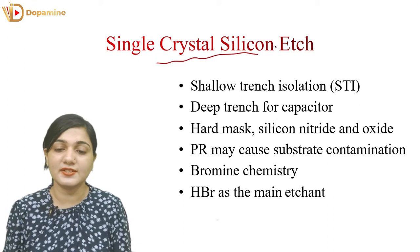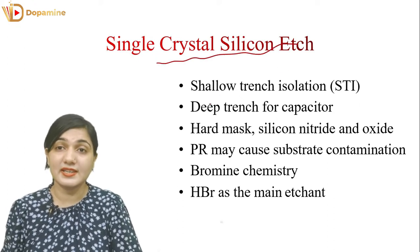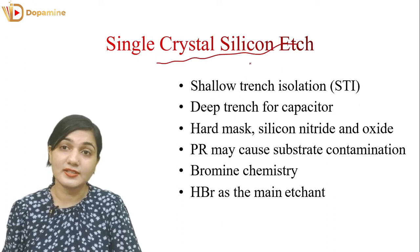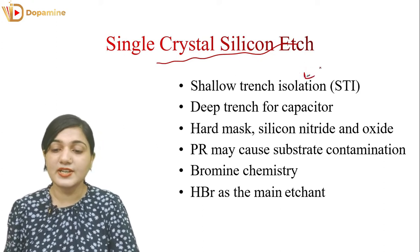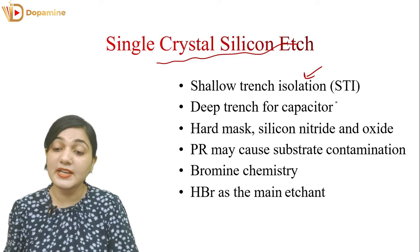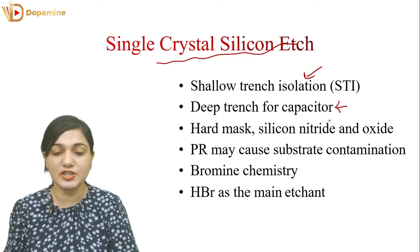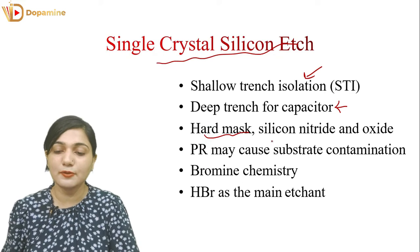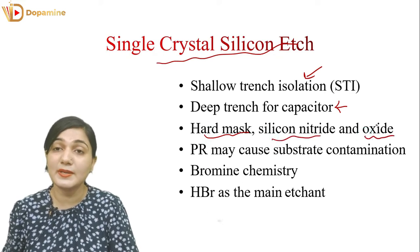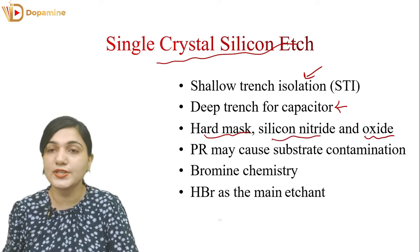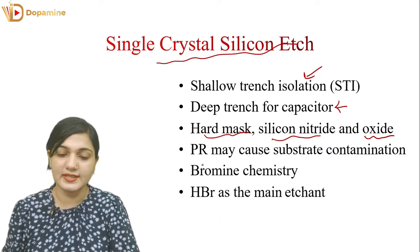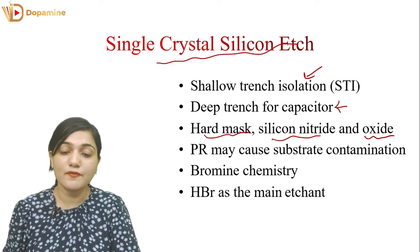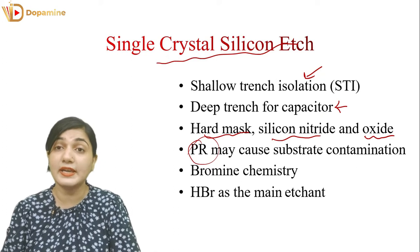The first type of etching is single crystal silicon etch. When we are etching in single crystal silicon, why are we etching in silicon? For shallow trench isolation or deep trench, for capacitor formation. Here we have a hard mask requirement — silicon nitride or oxide. We make a window with hard mask and then start etching in silicon. But here we have a window with photoresist.